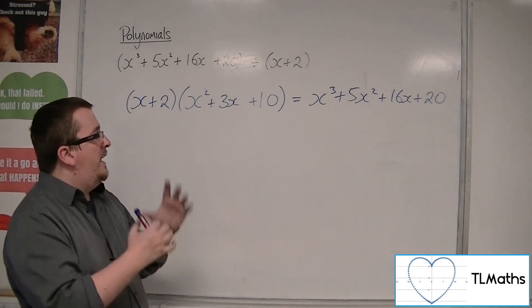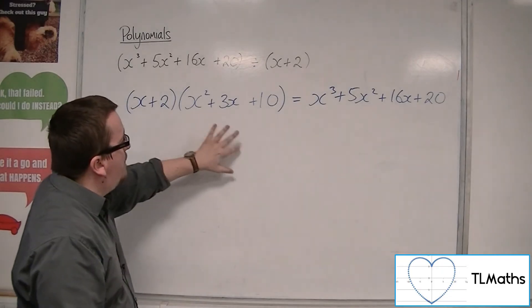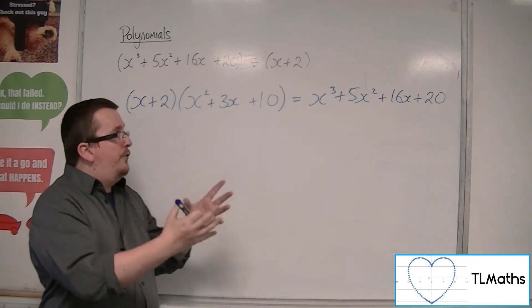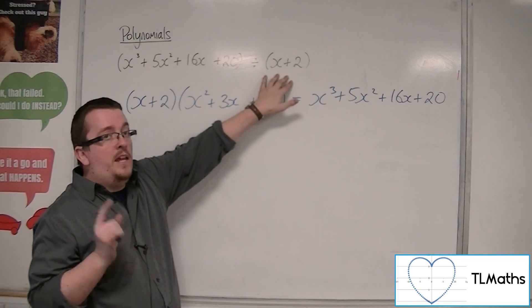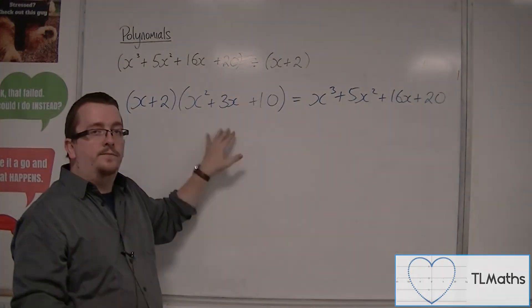But if worse comes to worst and you cannot remember how to do those methods, then maybe an inspection method would be all right if you know that what you're dividing by is a factor. If not, then this method may never work.